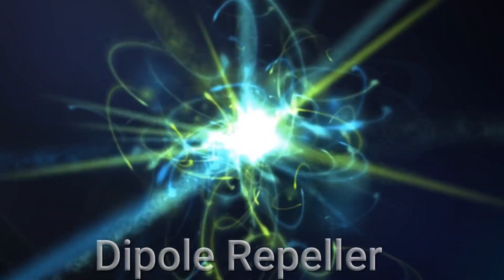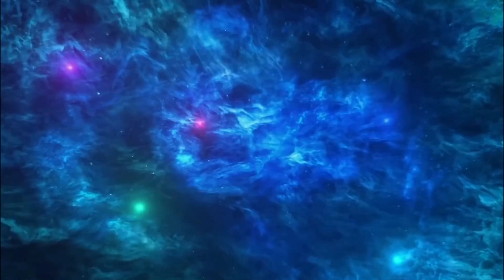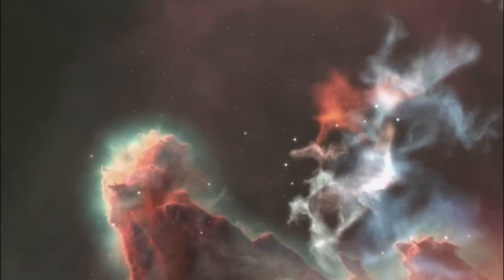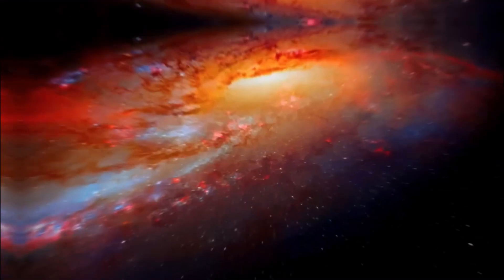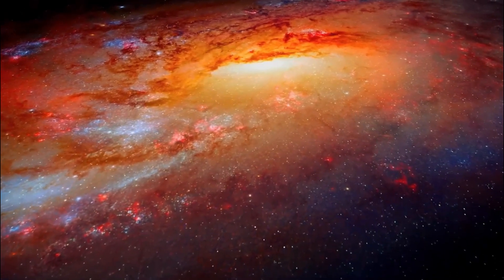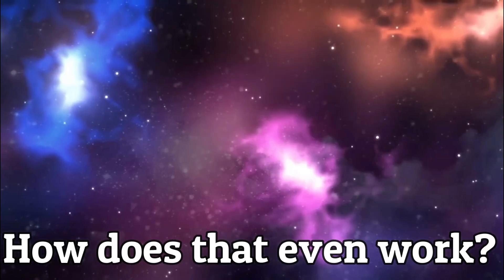This is the Dipole Repeller, which is just a hypothetical void, and maybe even a supervoid, that is on the opposite side of the Milky Way galaxy as the Shapley Supercluster. Therefore, as the Shapley pulls with its very strong gravity, the Dipole Repeller pushes with its massive emptiness. But how does that even work?